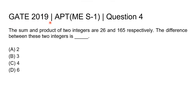Hello everyone. This question is from GATE 2019, Mechanical Engineering, Set 1. This is question number 4. The sum and the product of two integers are 26 and 165 respectively. The difference between these two integers is blank.